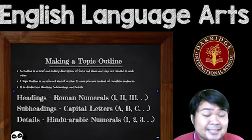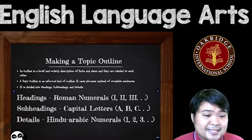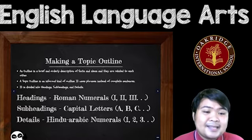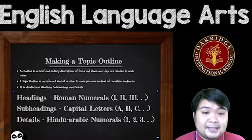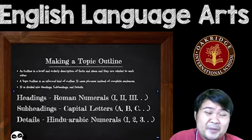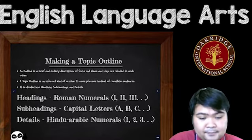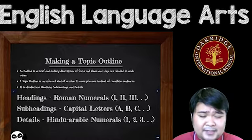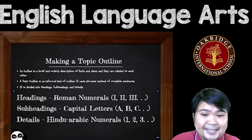A topic outline is an informal kind of outline. It uses phrases instead of complete sentences. It is divided into three different things: headings, subheadings, and details. You have to understand these first.